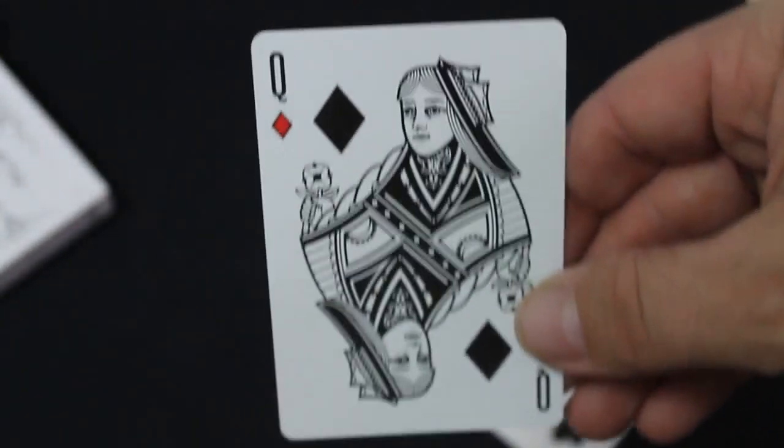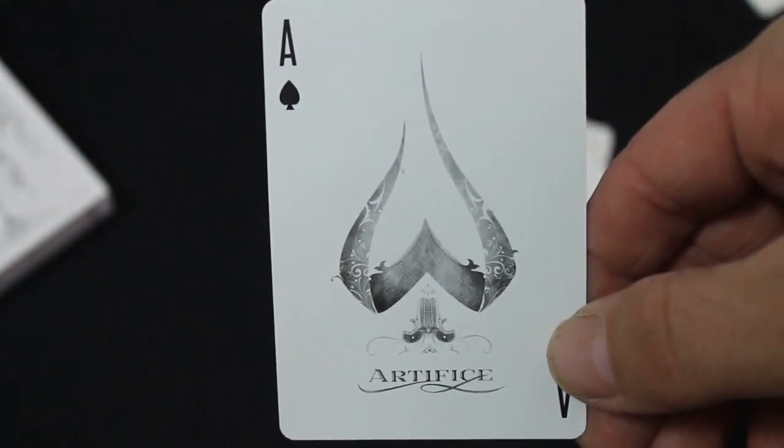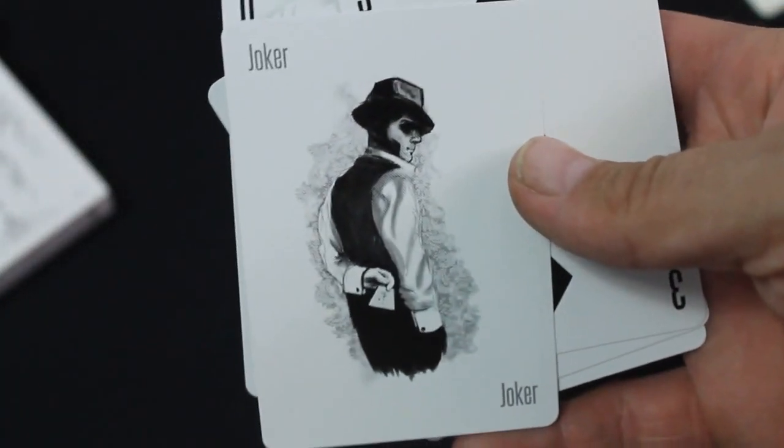Court cards again, kind of the same thing, all black and white, but with the Artifice court card. The Ace of Spades, pretty nice. The Artifice Ace of Spades, spade tip, I like it, pretty nice. And your Jokers right here somewhere. You've got the Artifice Joker, the guy doing some magic. He's got a card behind his back.